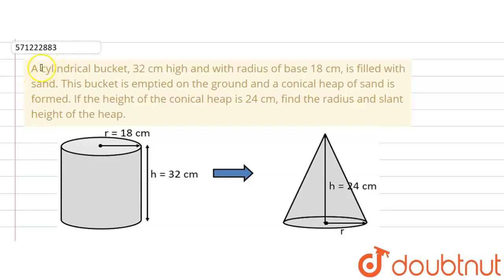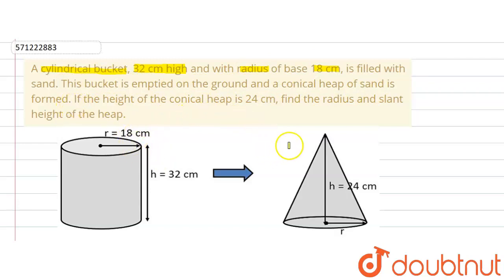The given question says that a cylindrical bucket is 32 cm high — this is the height of the cylindrical bucket — and the radius of the base is 18 cm. The cylindrical bucket is filled with sand and then emptied on the ground, forming a conical heap of sand. The height of the conical heap is 24 cm, and we are asked to find the radius and slant height of the heap.